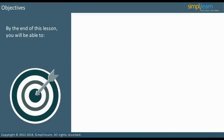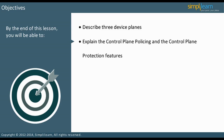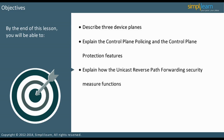By the end of this lesson, you will be able to describe three device planes, explain the control plane policing and the control plane protection features, explain how the unicast reverse path forwarding security measure functions, and discuss Cisco's firewall options.